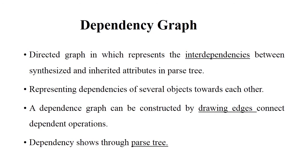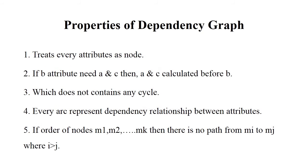When we generate a particular tree, each and every node in the tree is dependent on each other. A dependency graph is constructed by drawing edges connecting dependent operations. We use arrows for each node representation, and these arrows show the dependency between nodes. The dependency is shown through a parse tree — a data structure used to show the dependency graph.